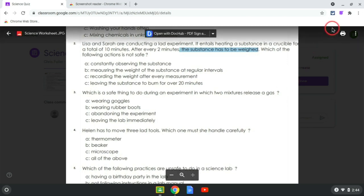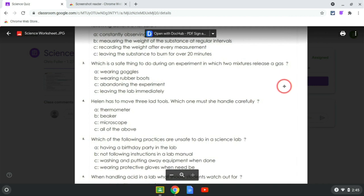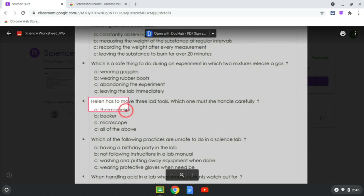First, click on the Screenshot Reader icon in the top right corner. Your mouse cursor turns into a crosshair. Move your mouse to the top corner of the block of text, then click and hold and stretch a box across the text you want read to you.